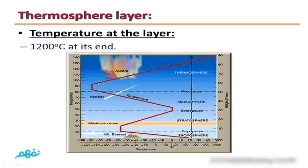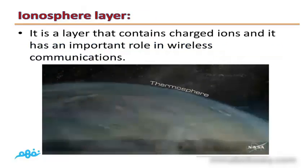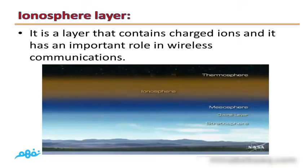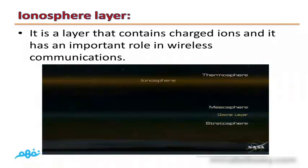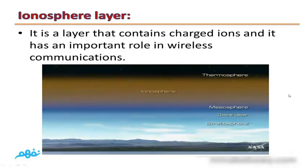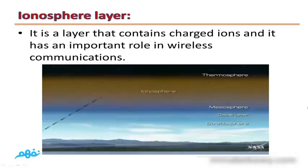Temperature in this layer increases gradually from negative 90 up to 1200 degrees Celsius at its end. The upper part of the Thermosphere contains charged ions, so this part is known as the Ionosphere. The Ionosphere layer contains charged ions and plays an important role in wireless communications, as it reflects wireless communication signals.